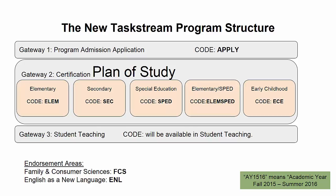You're going to now enroll in three gateways. Gateway 1 includes everything you need to apply for the program, including your 2200-level courses and the special education prereq courses for SPED candidates. If you have already applied to the program and have been accepted, you do not need to enroll in this gateway.